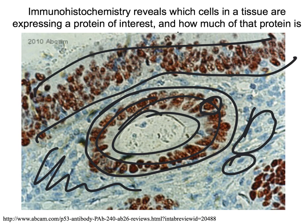So that's an overview of how we can use molecular biology testing methods to analyze clinical samples. The key points are: like detects like. If we're going to look for a nucleic acid with a specific sequence, we use another nucleic acid with the sequence we're interested in. If we're looking for a particular protein, we'll use another protein, usually an antibody, to detect the protein of interest in a clinical sample.